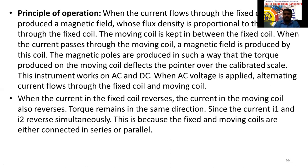The moving coil deflects the pointer over a calibrated scale. This instrument works on both AC and DC. When AC voltage is applied, alternating current flows through both the fixed coil and moving coil. When the current in the fixed coil reverses, the current in the moving coil also reverses simultaneously.